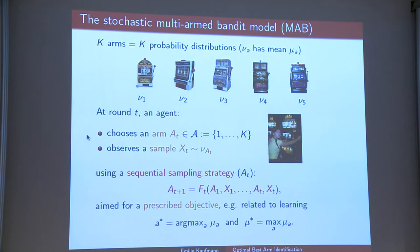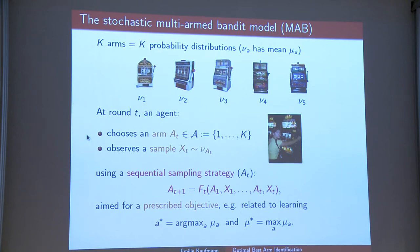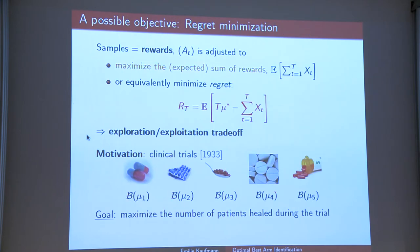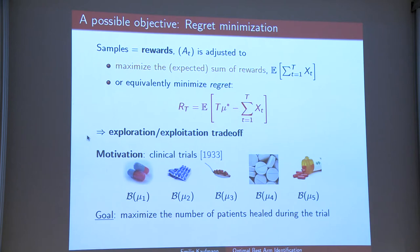Our criterion for 'best' will be the arm with highest mean. Specifically, we want to identify the arm A* that maximizes the mean, and we denote by μ* the mean of this arm. This learning process can have several constraints. The first constraint considered in the literature is regret minimization, in which the samples collected are viewed as rewards and the goal is to adjust the sampling strategy so that one maximizes the expected sum of rewards accumulated during the interaction.